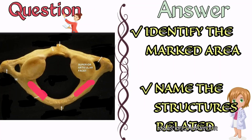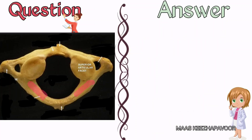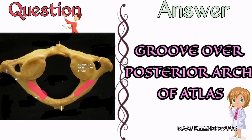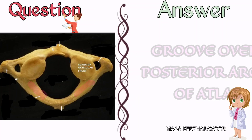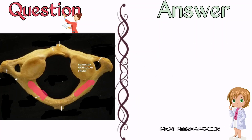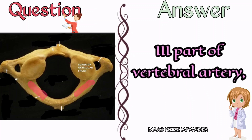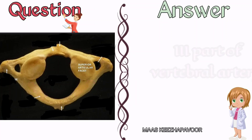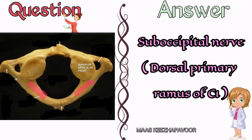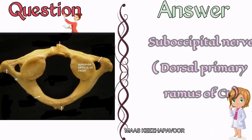Identify the marked area and name the structures related to this area. The marked area is the groove over the posterior arch of atlas. The structures related here are the third part of the vertebral artery and the suboccipital nerve, that is the dorsal primary ramus of C1 spinal nerve.